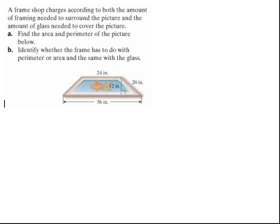Here we have an application problem, or this is part of the problem-solving part of this section. It says a frame shop charges according to both the amount of framing needed to surround the picture and the amount of glass needed to cover the picture. Part A says find the area and perimeter of the picture below.